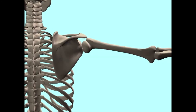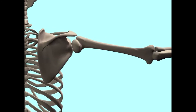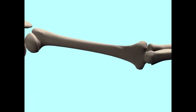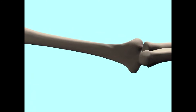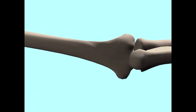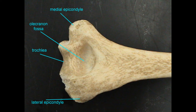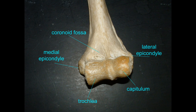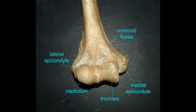Distally, the humerus widens to form the medial and lateral epicondyles. On the posterior surface, the prominent olecranon fossa is where the olecranon, or elbow, fits when the forearm is extended. On the distal anterior surface of the humerus is a smaller depression, known as the coronoid fossa, for the coronoid process of the ulna.